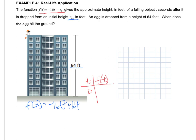So now I go and plug it in. So when t is 0, you get negative 16 times 0 plus 64. And that is 64.